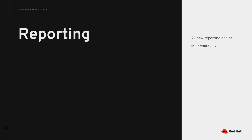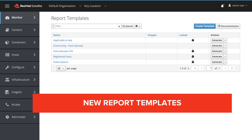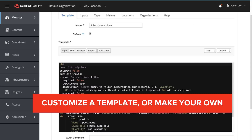Another new feature in Satellite 6.5 is an all-new reporting engine. This includes pre-canned reports for host status, subscriptions, registered host, and applicable errata. You can customize any of these reports or even create your own. Here's an example of what those report templates look like, and if I create a clone of the subscriptions report, you can modify it to suit your specific needs.